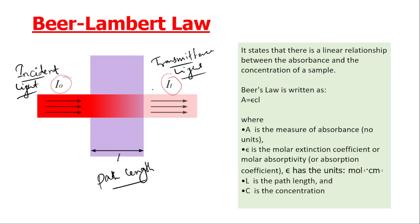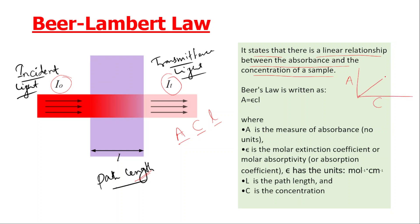This is the concept of Beer-Lambert Law. We have incidence light, transmission light, path length, absorbance, concentration, and path length. Beer-Lambert Law states that there is a linear relationship between absorbance and concentration of the sample.